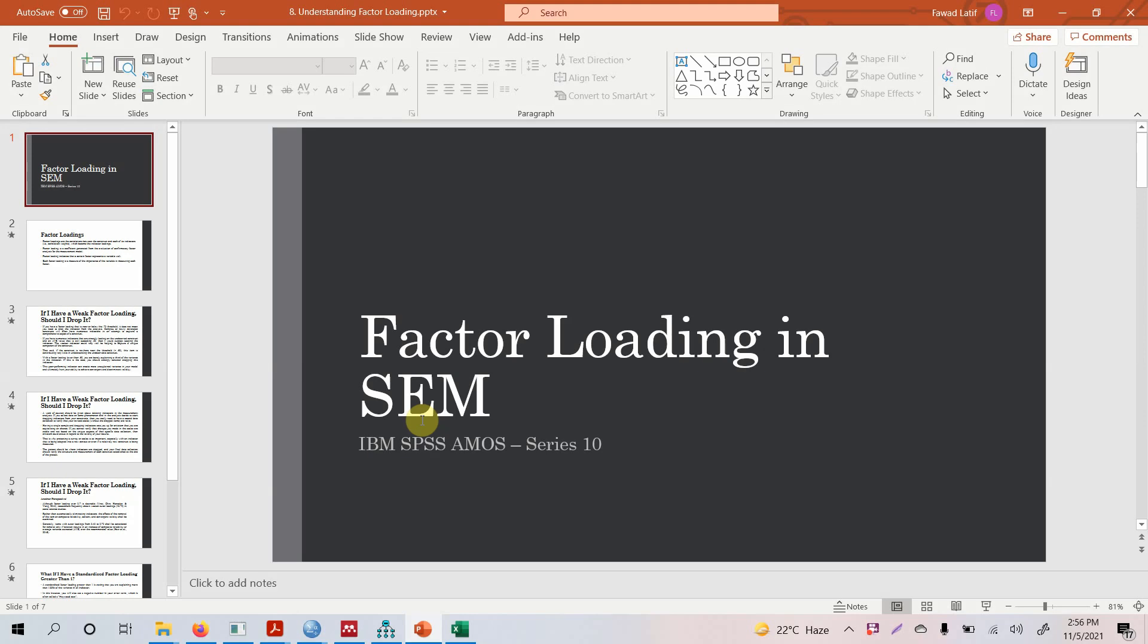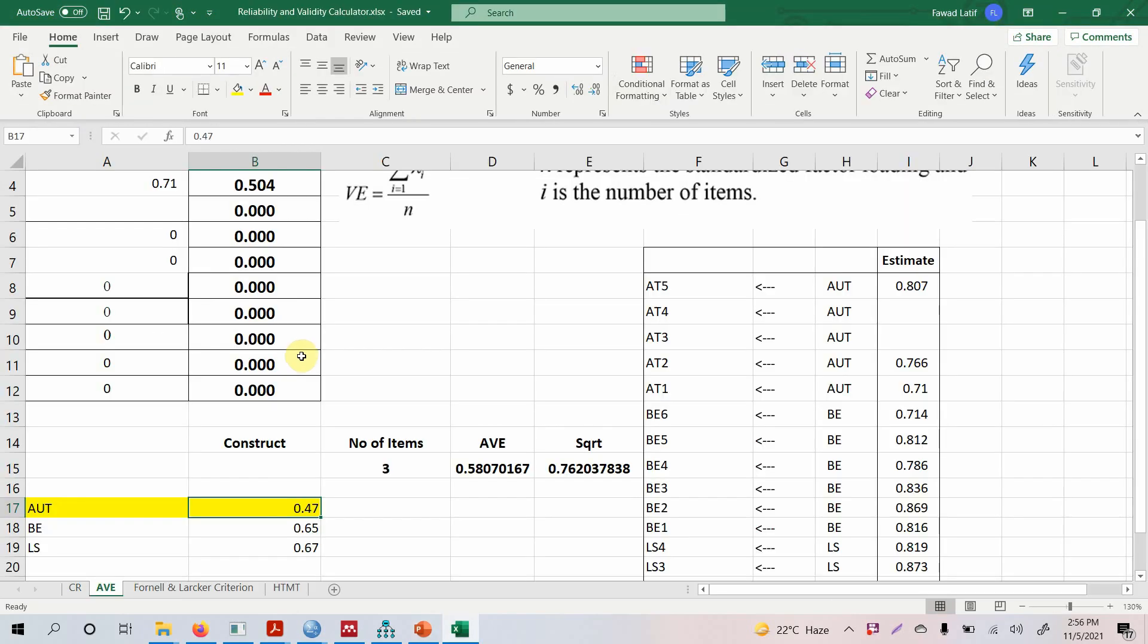Factor loading in SEM: When establishing convergent validity, we came across this issue where authentic leadership had AVE score less than 0.50.